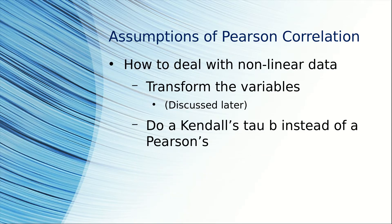What do you do if your variables aren't linear? There are two possibilities. One is to transform the variables, which I'll discuss later. Another is to do a Kendall's tau b instead of a Pearson's correlation.